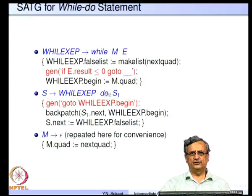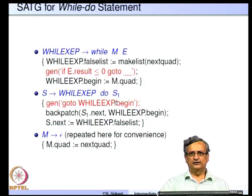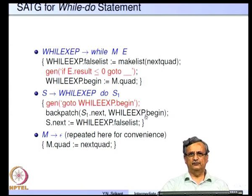For the production S going to 'while-exp do S1': code for the expression and S1 has been generated, and we need to jump back to the beginning. So 'gen goto while-exp dot begin' takes care of that. All jumps out of S1 must also go back to the beginning of the while loop: back-patch S1 dot next to while-exp dot begin. The only jump out of the entire while statement is S dot next equal to while-exp dot false list.